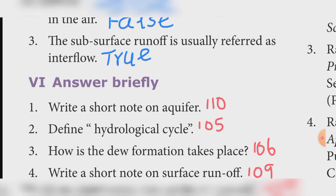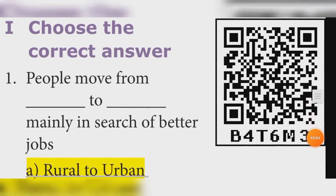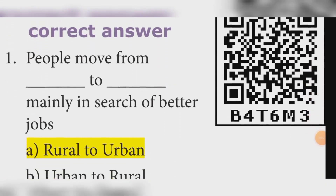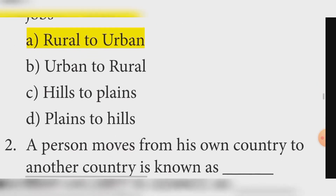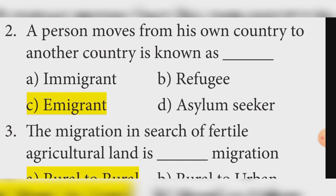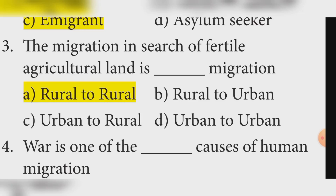Unit 4, Migration and Urbanization. Choose the correct answer. First: People move from rural to urban areas mainly in search of better jobs. Answer: Option A — Rural to urban. Second: A person who moves from his own country to another country is known as? Answer: Option C — Emigrant. Third: The migration in search of fertile agricultural land is? Answer: Option A — Rural to rural.